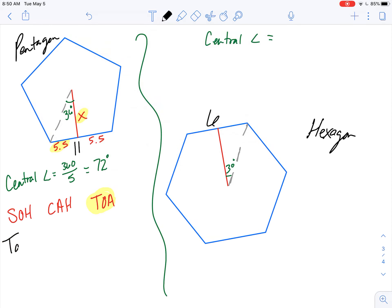So the tangent, the tangent of 36 degrees is going to be equal to opposite, five and a half, over the adjacent of x. And I'm trying to solve for my apothem, which is x.